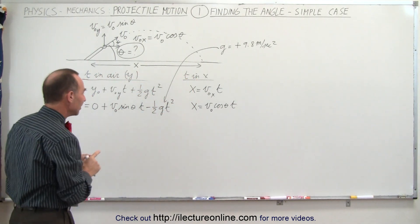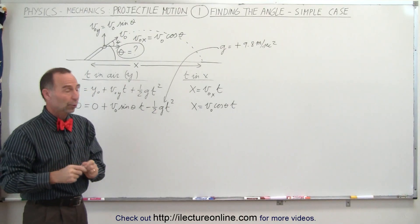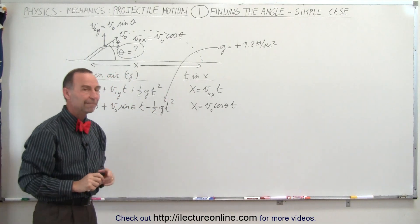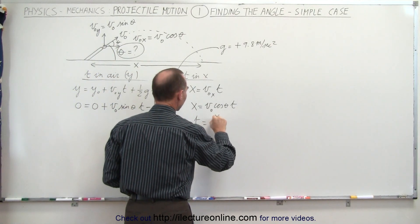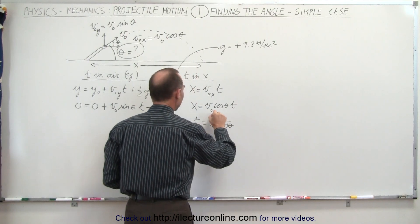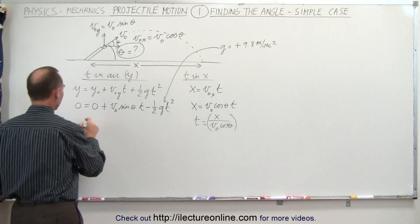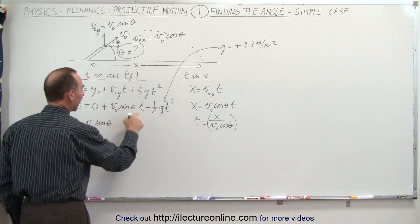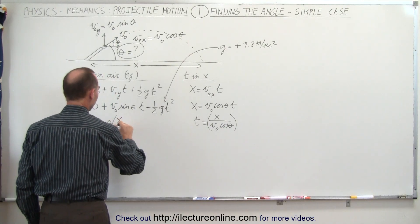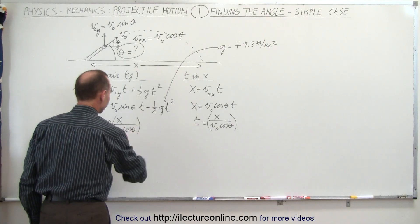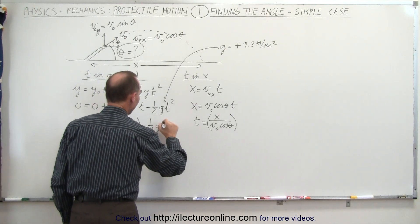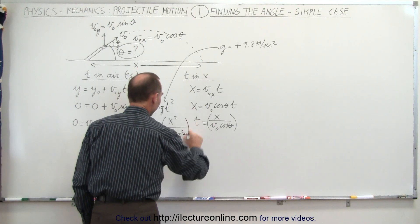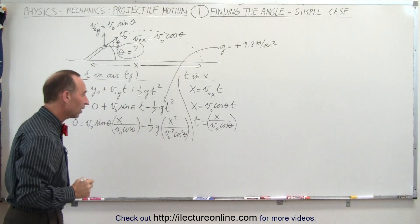Now we solve those two equations simultaneously by eliminating the unknown variable time. We solve the x equation for t: t equals x divided by v sub naught times cosine of theta. We plug that into the y equation, so t squared becomes x squared divided by v sub naught squared times cosine squared of theta.